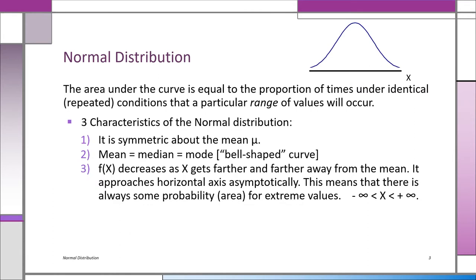Let's look at some properties of the normal distribution, the famous bell-shaped curve. Three key characteristics: first, it's symmetric about the mean — the right side looks exactly the same as the left side. Second, the highest point is right in the center, and the mean equals the median equals the mode. Third, as you move further and further from the mean, f(x) gets smaller and smaller. The curve is asymptotic — it gets closer and closer to the horizontal axis but never quite touches it, extending from plus infinity to minus infinity.